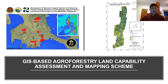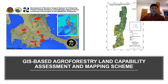The study was conducted in selected upland watersheds in five municipalities of Calabarzon, namely Silang Cavite, Nagcarlan Laguna, Rosario Batangas, Tanay Rizal, and Sarayaya Quezon.